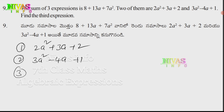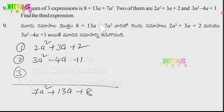So I will find out: 3 expressions in addition to this result. The two known expressions are 2a² plus 3a plus 2, and 3a² minus 4a plus 1. The total result is 7a² plus 13a plus 8. So this is our equation.